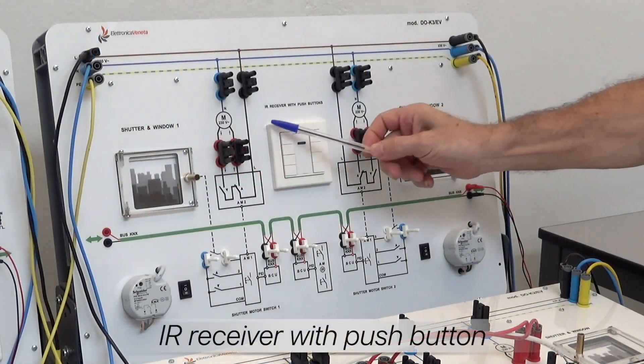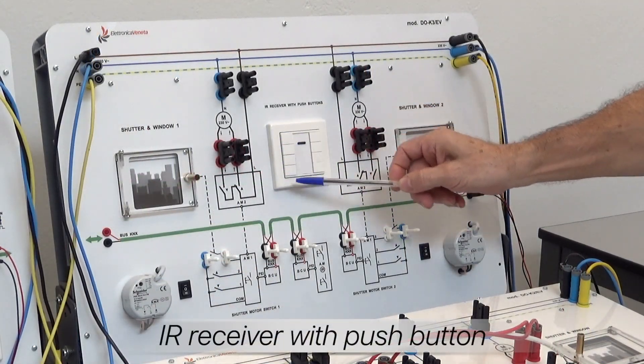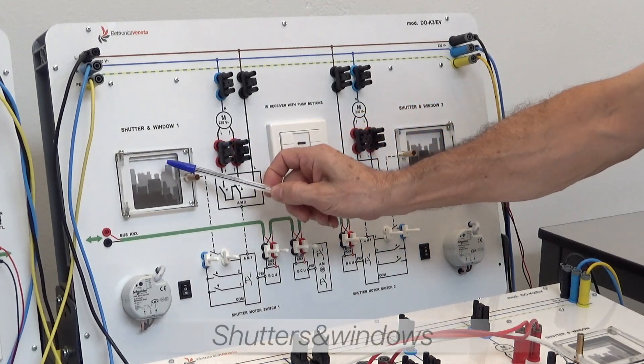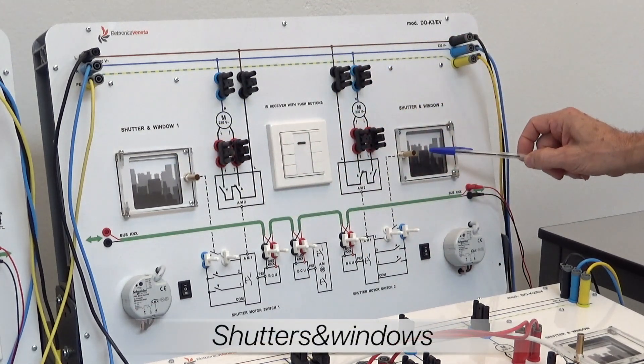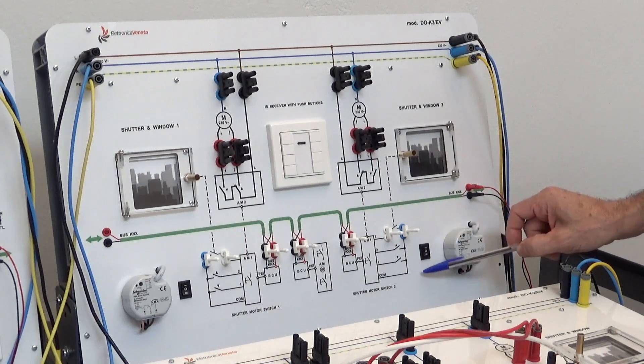The DOK3 module controls windows and shutters. Each shutter can be operated separately using its push button.